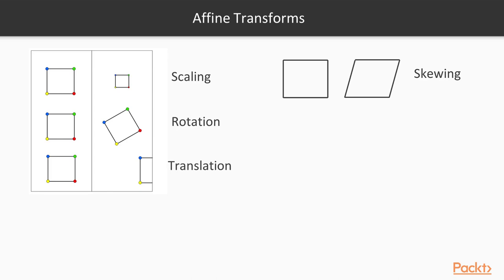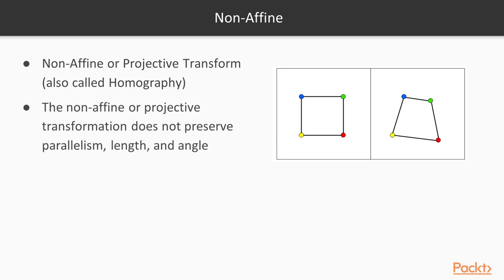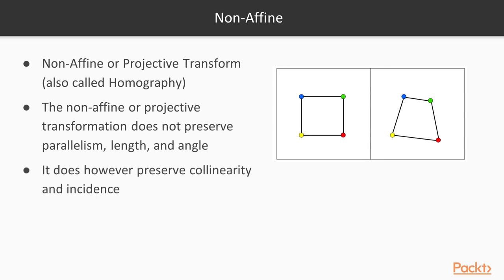Now let's move on to non-affine transformations, also called projective transforms or homography. In non-affine transformations, we don't preserve parallelism, length, and angle. It does, however, preserve collinearity and incidence - collinearity meaning that points still lie on a straight line, so we're not bending points. You can see that we've lost parallelism in these two lines here, which proves this is a non-affine transformation.